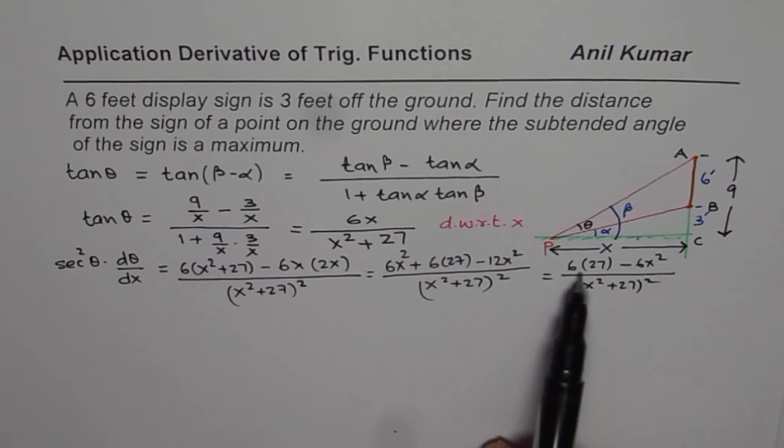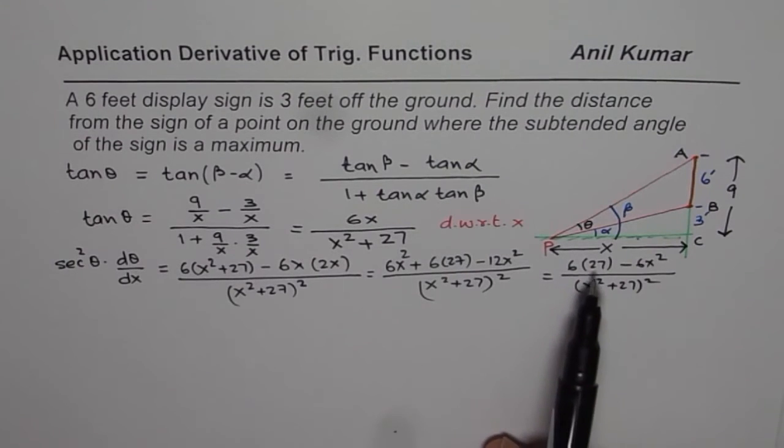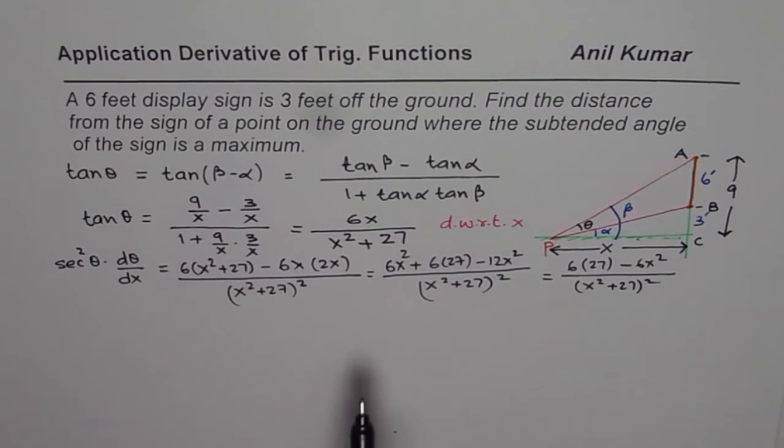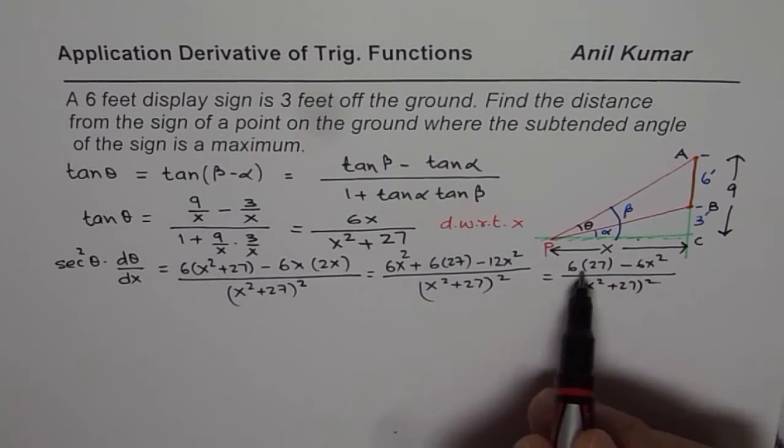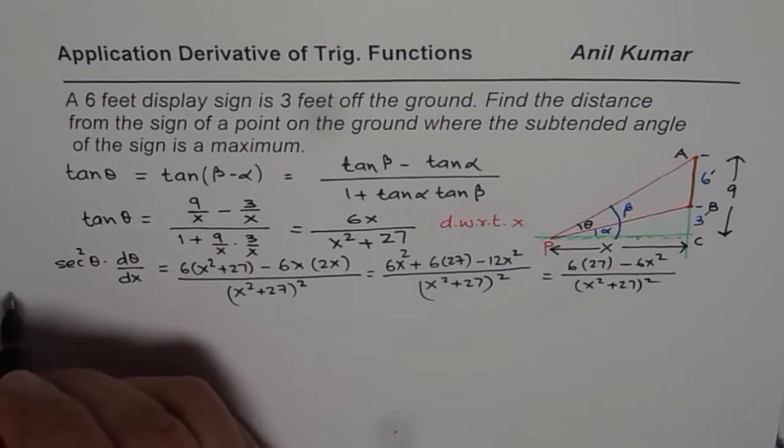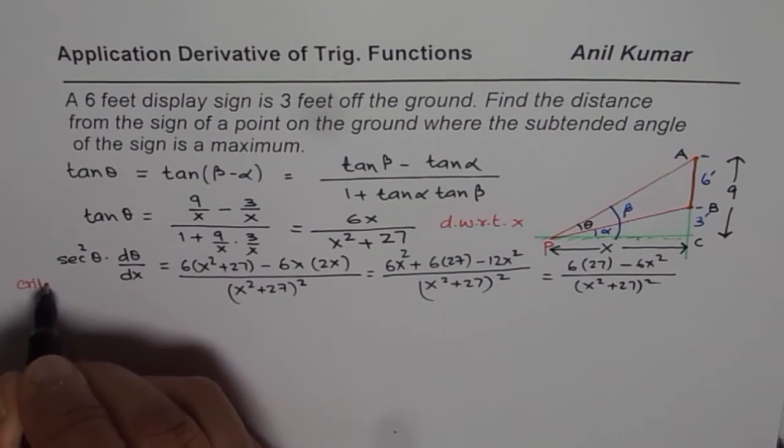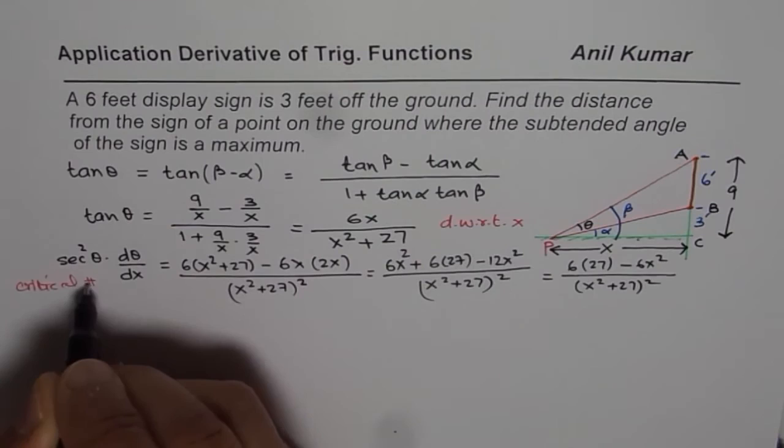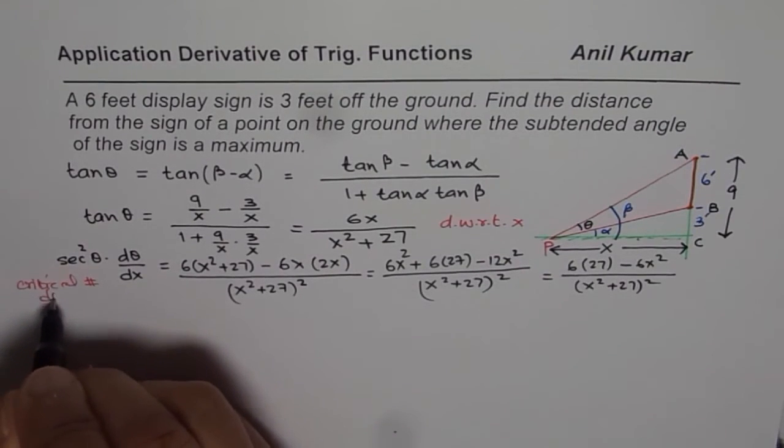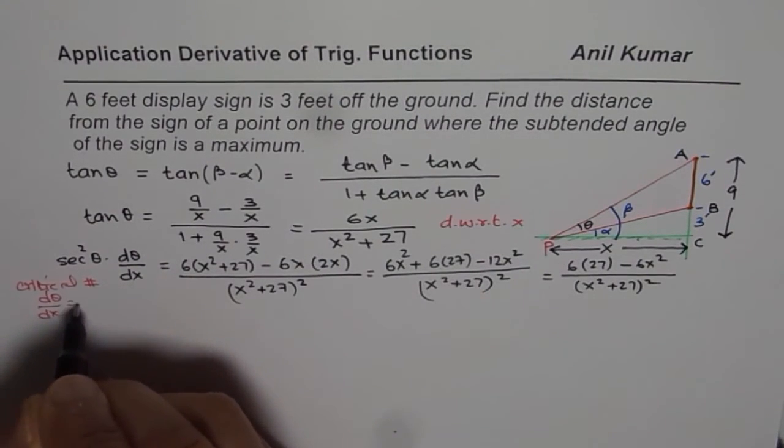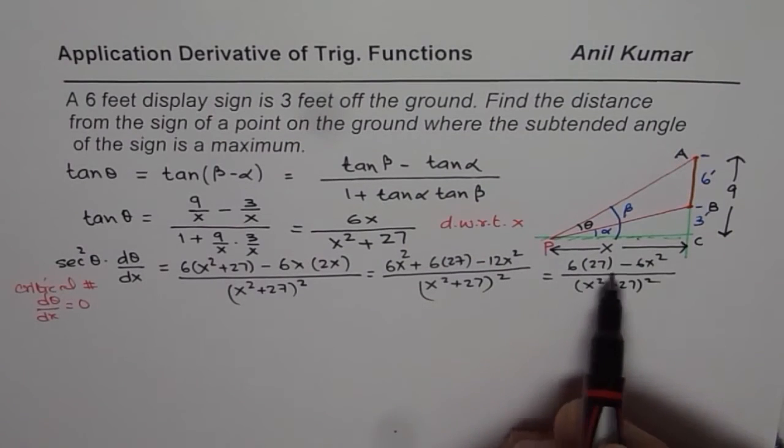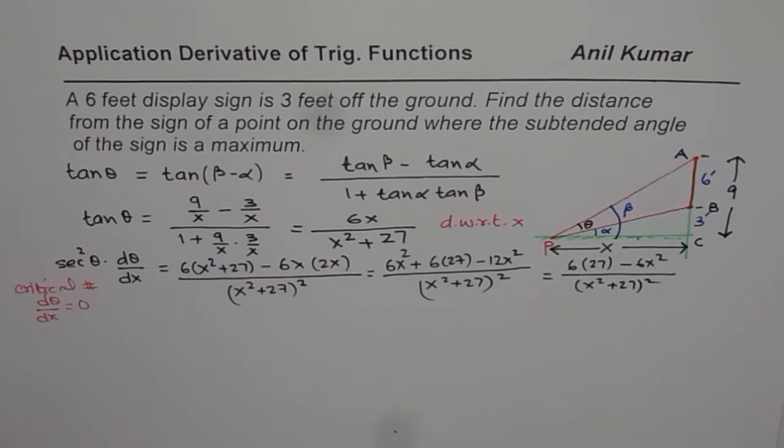Here you can of course take 6 and 6 common. So we get 27 minus X square, correct? Now for critical number, this should be 0, right? So for critical number, d theta dx equals to 0. Now that is going to be 0 only if we have this numerator as 0, right?